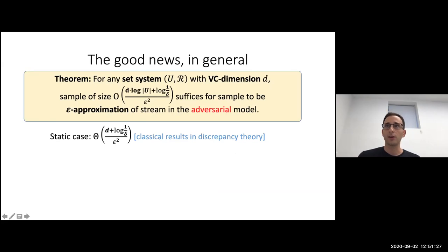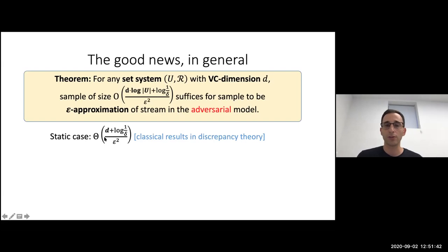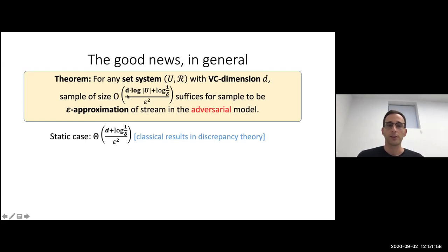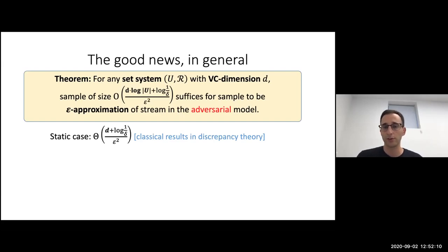In the static case without an adaptive adversary, you just needed D plus the usual log(1/delta) / epsilon^2 — it was really just a question of VC dimension. Going back to the median case: the set system needed was all intervals, and intervals have VC dimension 2, so it was just a constant. What we show here is that the difference between the static and adversarial case is just this factor of log U, and it's not just an artifact of the analysis — we showed a full attack demonstrating that log U is actually necessary.